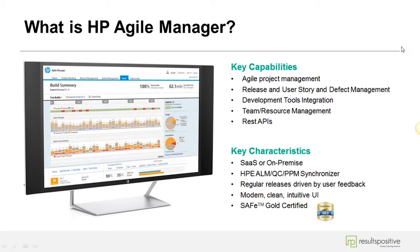Agile Manager can be either SaaS — software as a service, on-demand — or on-premise. If you're in a highly regulated industry like the Department of Defense or banking and aren't comfortable with cloud-based software, you can get a bundled on-premise version installed within your data center. Additionally, Agile Manager not only integrates with ALM and Quality Center, but also with PPM — Project and Portfolio Management. HP has developed adapters so Agile Manager can trade metrics, send sprint and user story information up into PPM.